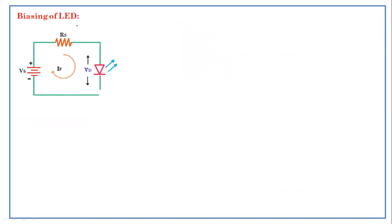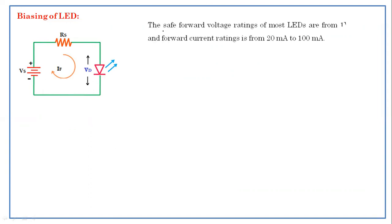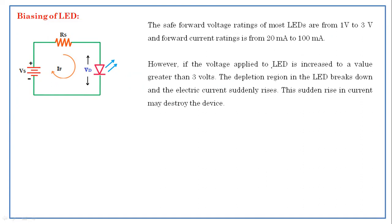If you see the biasing of the LED, the positive terminal is given to the p-type and the negative terminal is connected to the n-type. The safe forward bias rating of most LEDs is between 1 volt to 3 volts, and the forward current rating is from 20 milliamperes to 100 milliamperes. However, if the voltage applied to the LEDs increases to a value greater than 3 volts, the depletion region in the LED breaks down and the electric current suddenly rises. This sudden rise in current may destroy the device, as the depletion region decreases and current increases drastically.